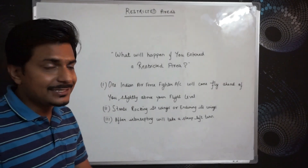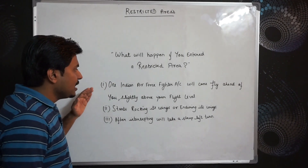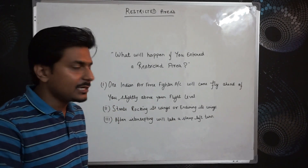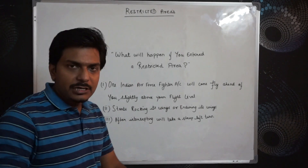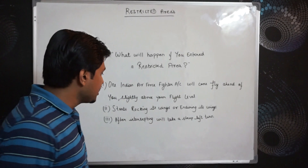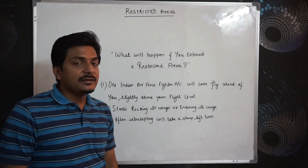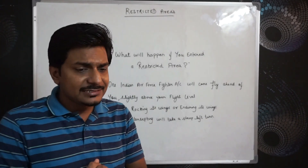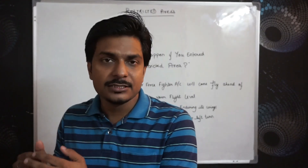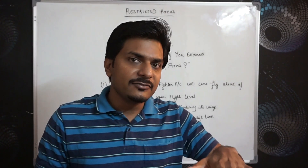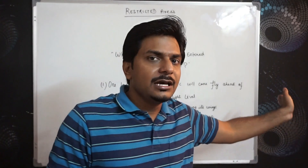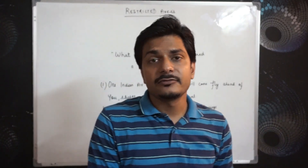So what will happen if you enter a restricted area? First of all, one Indian Air Force A4 fighter aircraft will come and fly ahead of you, slightly above your flight level, then start rocking its wings - enduring its wings like that. This is known as enduring or rocking its wings. After intercepting, it will take a steep left turn.